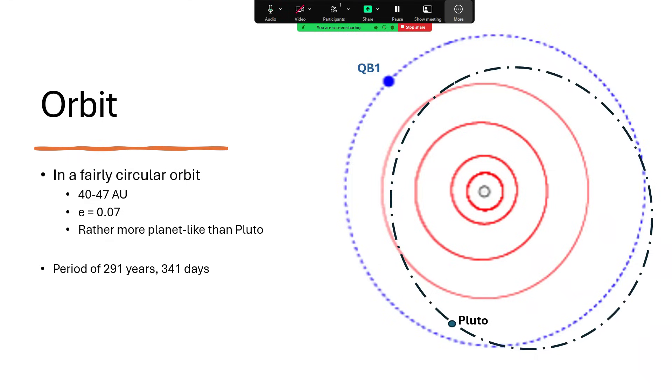It's slightly elliptical, 40 to 47 AU, the Earth-Sun distance. Neptune's orbit is about 30 AU, and then Pluto's, well it dives within the orbit of Neptune from time to time and at the moment is just climbing away, moving out towards the far distant part of its orbit where it crosses out beyond the orbit of QB1.